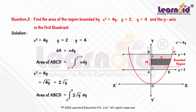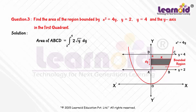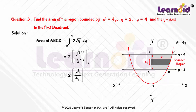Area of ABCD = 2 · ∫₂⁴ √y dy, which equals 2 · [y^(1/2 + 1) / (1/2 + 1)] from 2 to 4, which equals 2 · [y^(3/2) / (3/2)] from 2 to 4, which equals 2 · (2/3) · y^(3/2) evaluated from 2 to 4.